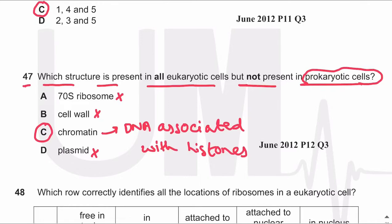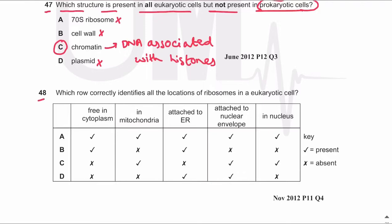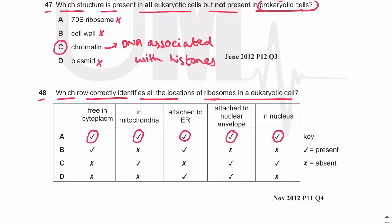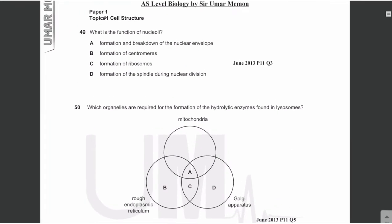MCQ number 48: which row correctly identifies all the locations of ribosomes in a eukaryotic cell? Ribosomes are found freely in the cytoplasm, inside the mitochondria (as 70S ribosomes), attached to the ER making it rough endoplasmic reticulum, attached to the outer nuclear membrane, and also inside the nucleus — because nucleoli inside the nucleus are the sites of ribosome synthesis. So the answer is A.